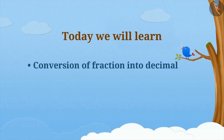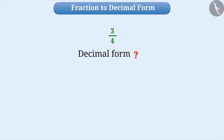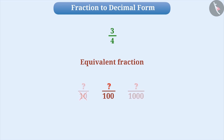Today, we will learn conversion of fractions into decimals and conversion of decimals into fractions. Let us learn how to represent a fraction in decimal form. Assume we need to express three by four in decimal form. To do so, we have to find the equivalent fraction of three by four whose denominator is ten, hundred, or thousand. We cannot make the denominator ten. But if we multiply the numerator and denominator of three by four by twenty-five, we get the equivalent fraction seventy-five by hundred. Now we can write seventy-five hundredths as 0.75.